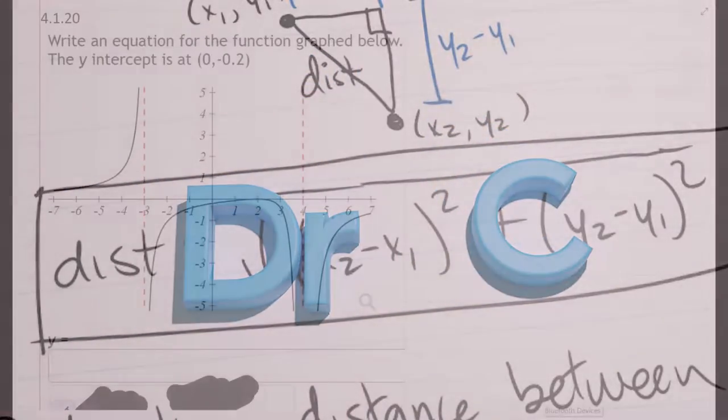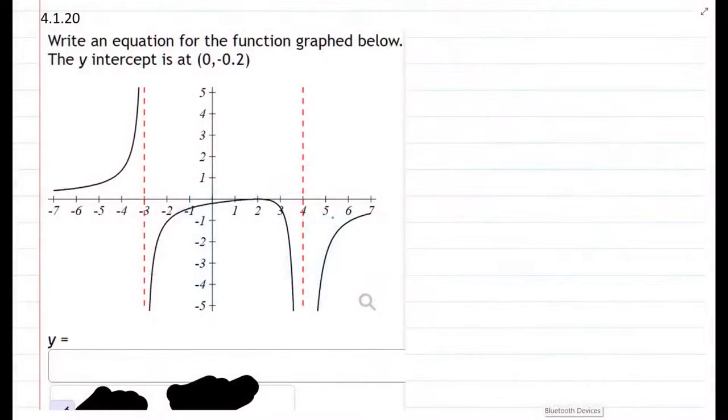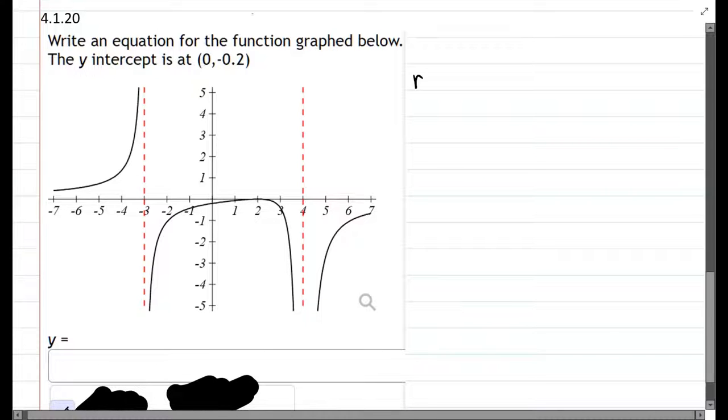We're going to construct a rational function that will have the graph that we're looking at here. The most important thing to remember about rational functions is they are a fraction of polynomials. In the numerator are your x-intercepts and in your denominator are your vertical asymptotes.